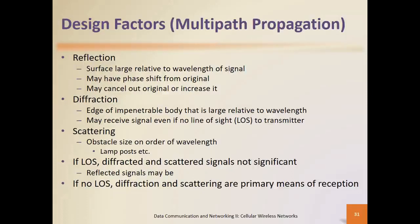Reflection may cause phase shifts from the original signal transmission, and it can cause the signal to be cancelled out or increased in its reflection. Propagation can either cancel out from the original source or increase because the signal is bouncing off a larger surface relative to the signal's wavelength. Diffraction occurs when the edges of structures are highly impenetrable by a given signal — for instance, a metallic structure or a large pillar within a given location of signal propagation.